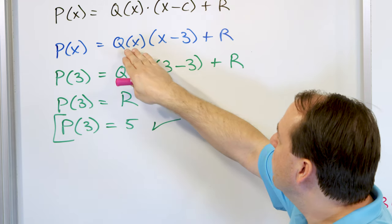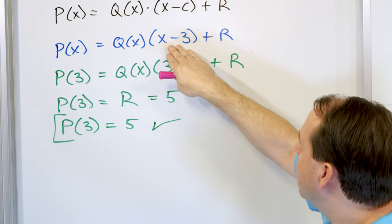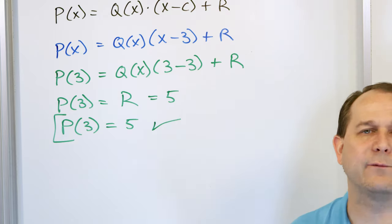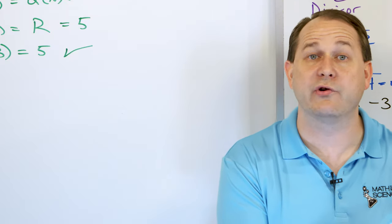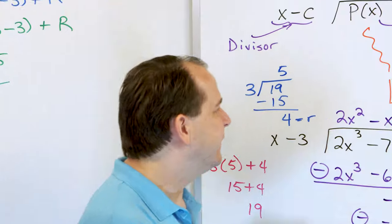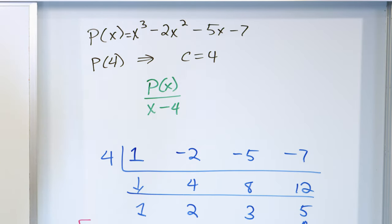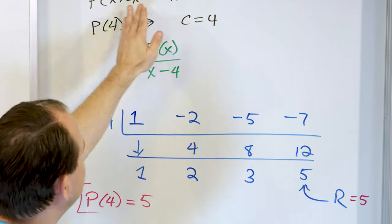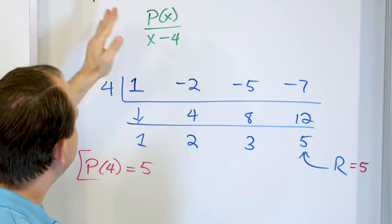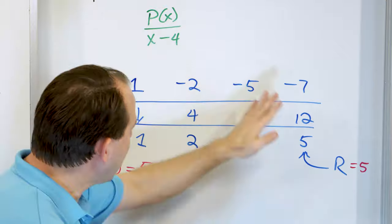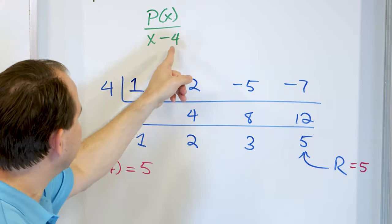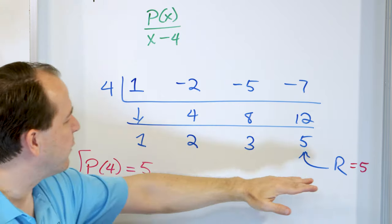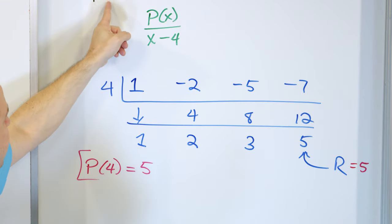The polynomial equals the quotient times the divisor plus the remainder. If we put the value of 3 in here, the 3 minus 3 makes it drop out. That's why we're always dividing by something closely related to what we're trying to evaluate at. The bottom line: you don't have to think about the proof every time. I give you a polynomial, they say find p of 4, you say I'll divide by x minus 4, do synthetic division, change the sign, and the remainder you get is p of 4.